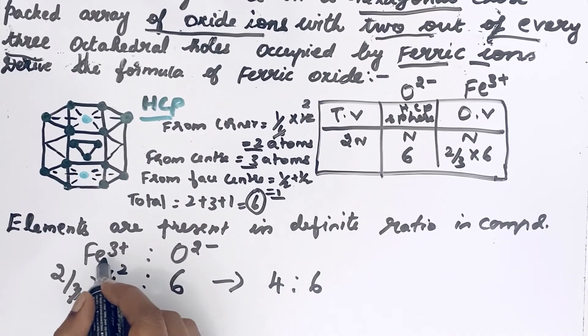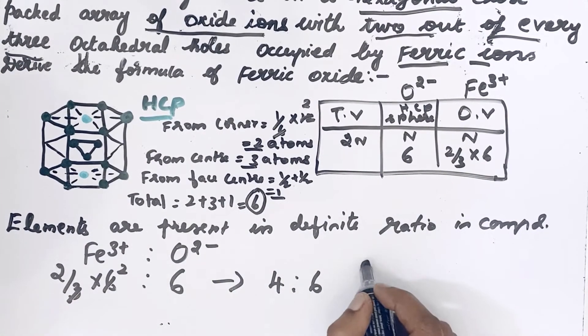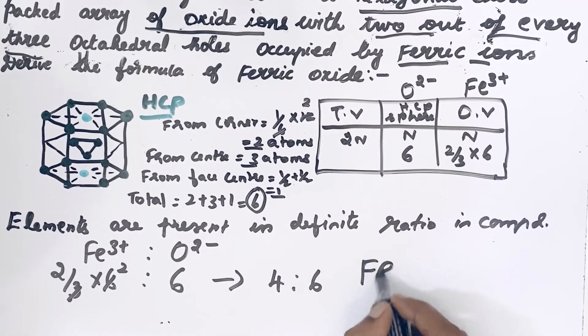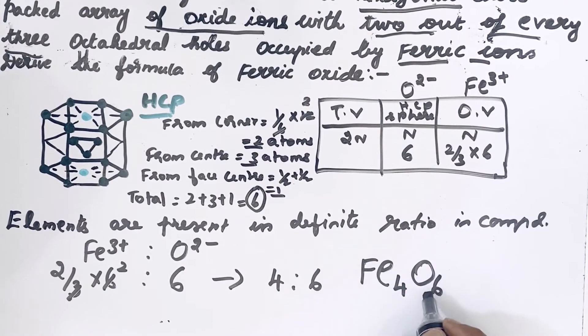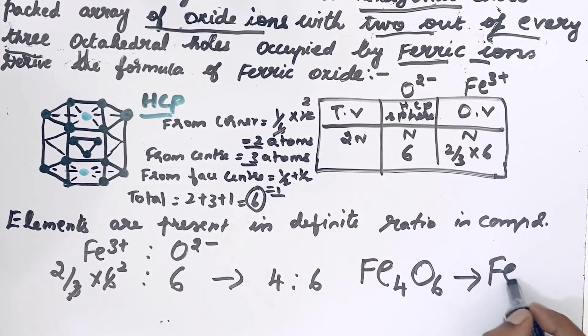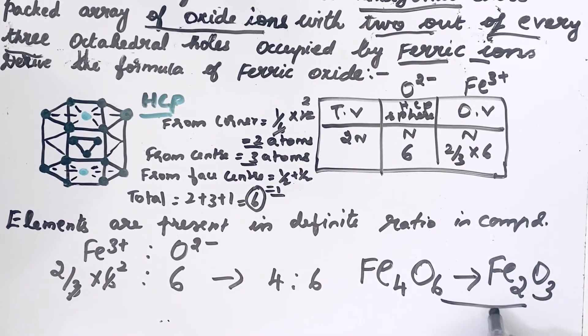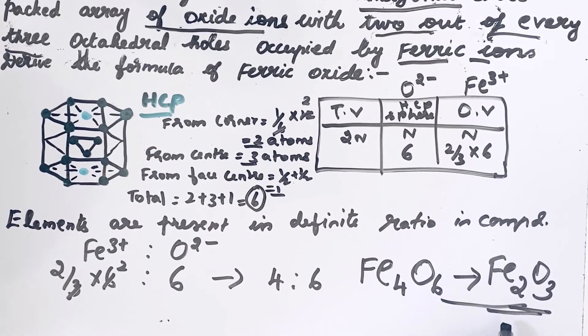This is 4 for Fe³⁺ and 6 for O²⁻. Let us write Fe₄O₆. This can be simplified, so let us write Fe₂O₃. Fe₂O₃ is the formula of ferric oxide.